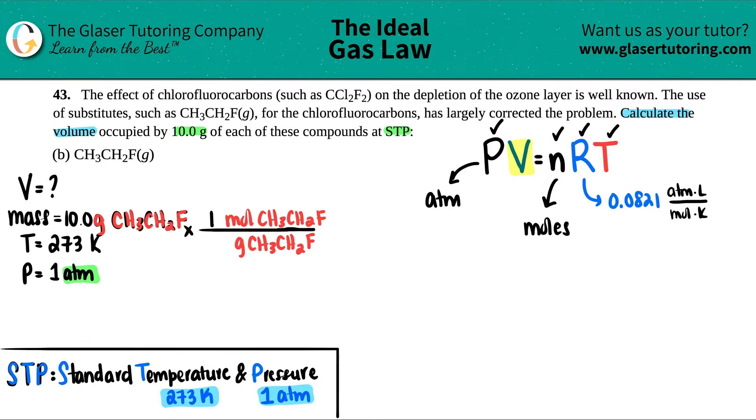So I got 12.01 plus three times 1.008, plus another carbon, 12.01, plus two times 1.008, and then plus a fluorine, which is 19. So I get roughly 48.06 grams. Cancel out the grams, and now we are able to get a mole value.